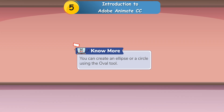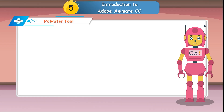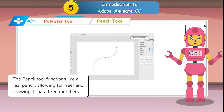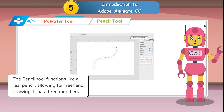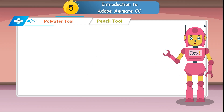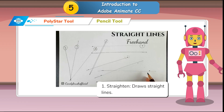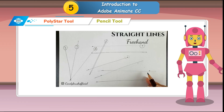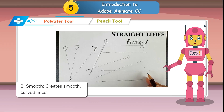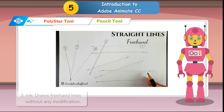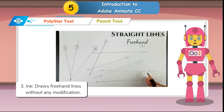Pencil Tool: The Pencil Tool functions like a real pencil, allowing for freehand drawing. It has three modifiers: 1. Straighten — draws straight lines. 2. Smooth — creates smooth curved lines. 3. Ink — draws freehand lines without any modification.